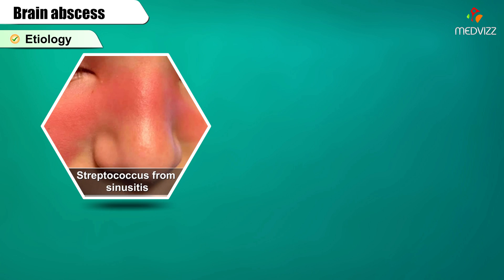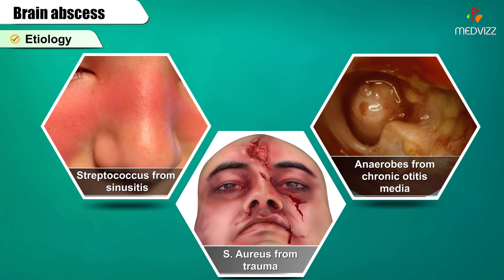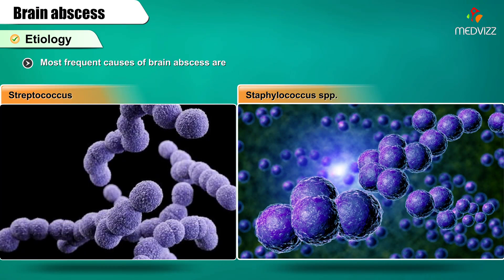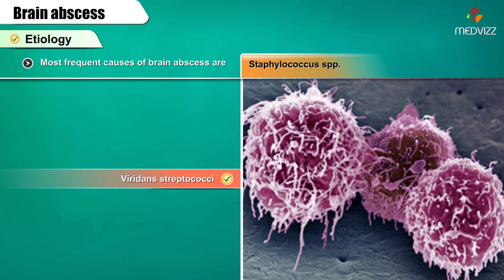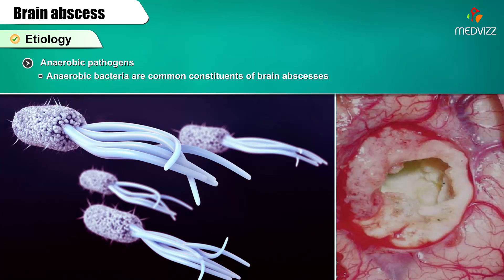Etiology: Streptococcus from sinusitis, Staphylococcus aureus from trauma, anaerobes from chronic otitis media. The most frequent causes of brain abscess are Streptococcus and Staphylococcus species. Among these, Viridans streptococci and Staphylococcus aureus are the most common.